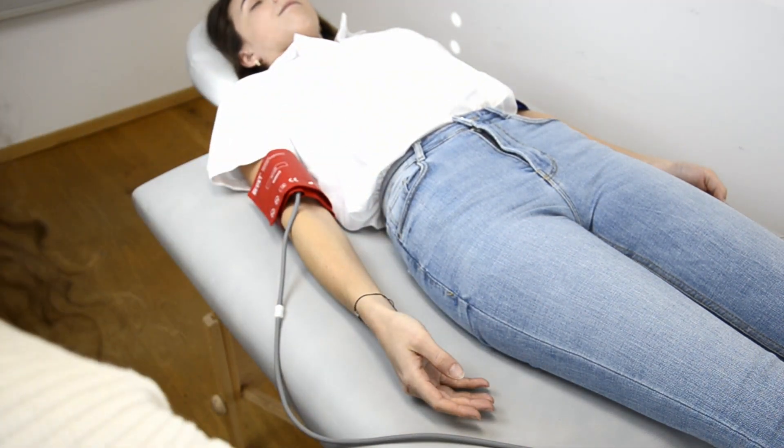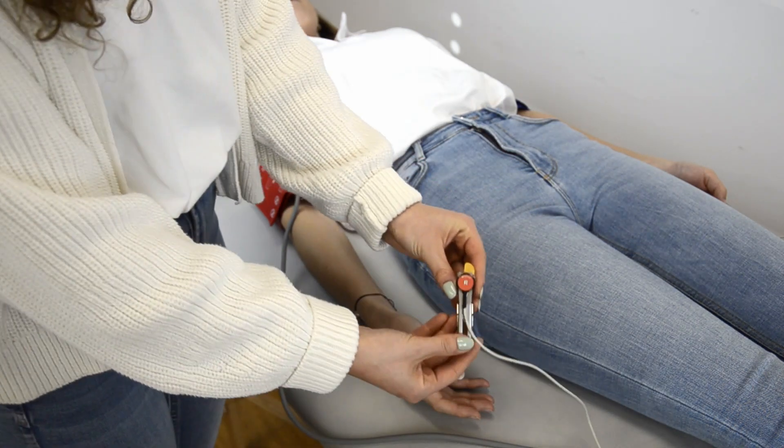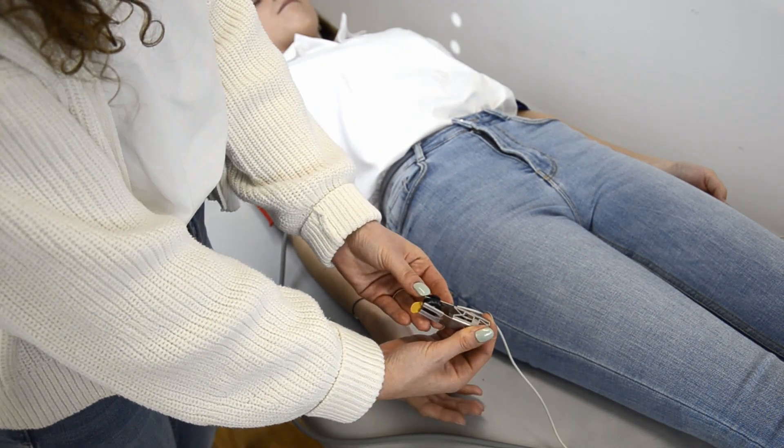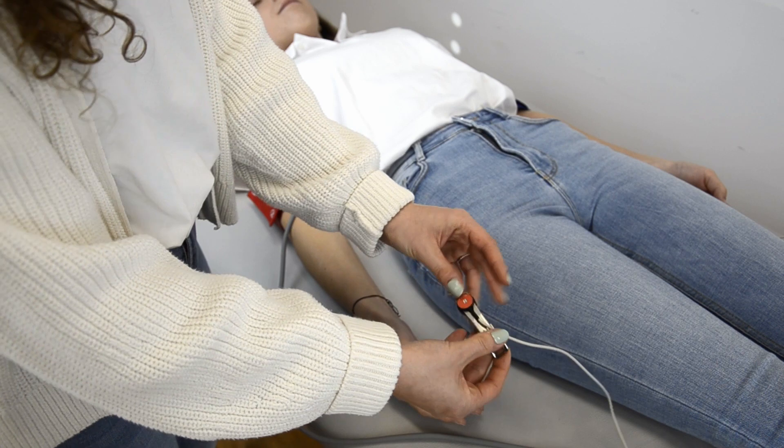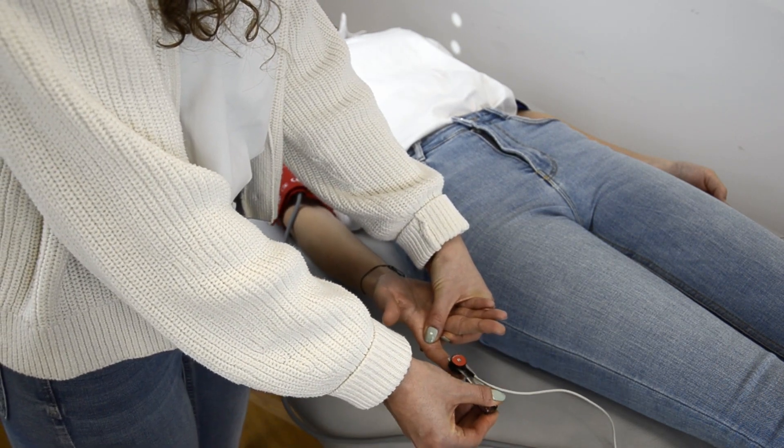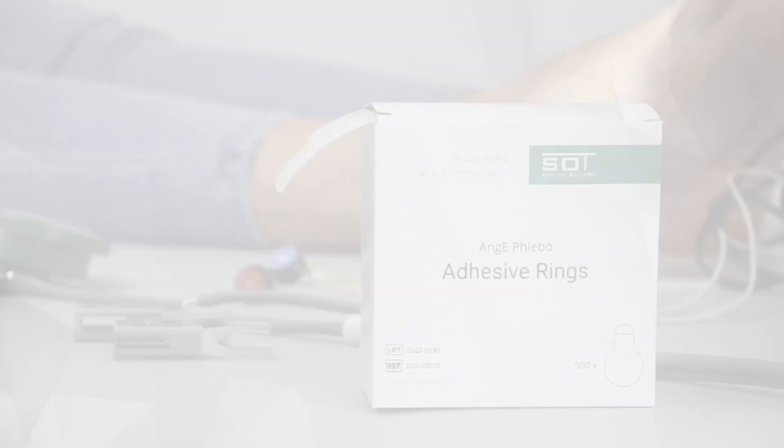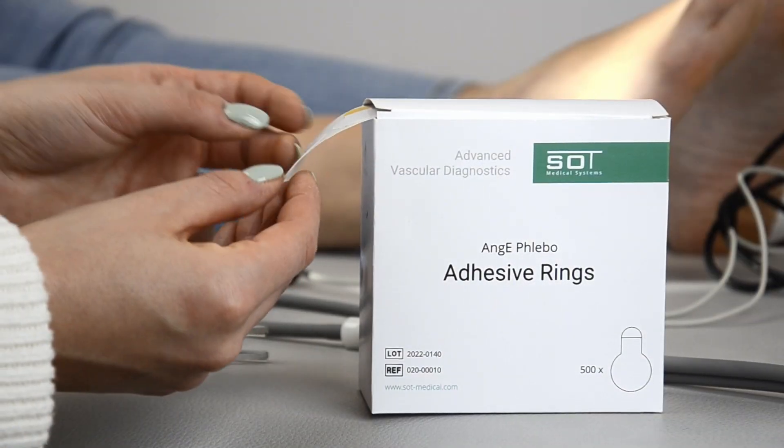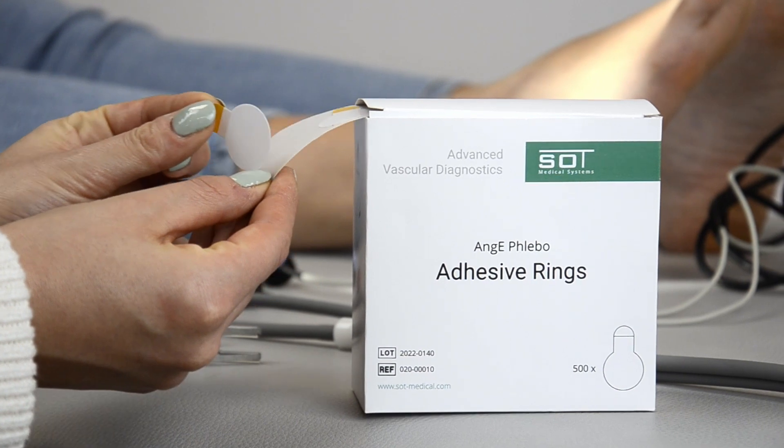Place the optical sensors on the fingers and ensure that they have full skin contact. Make sure that the right sensor is placed on the right side of the patient and the left sensor is placed on the left side of the patient. For hygiene reasons, sensors are always applied with adhesive rings.